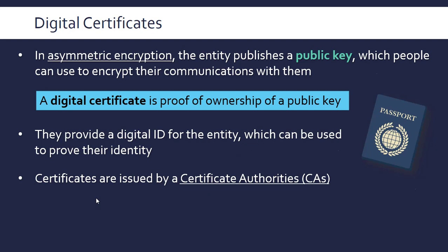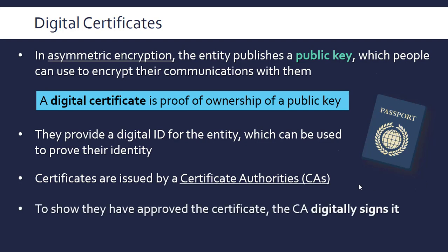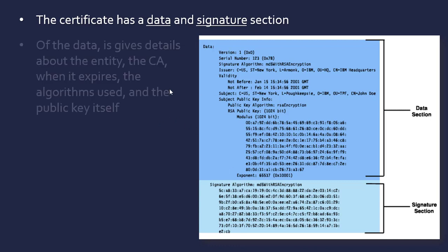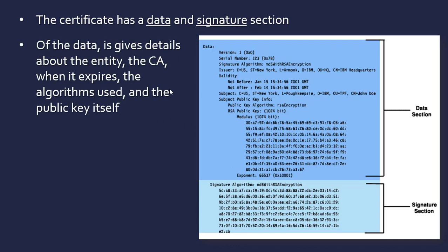There is an element of trust here — this is true for passports as well. When you go to another country, they look at the passport issued by a government and trust that government to have given the passport to the correct person. To show that an authority has approved the certificate, the authority will sign it digitally. The certificate will have two sections: a data section with details about the entity, the authority, expiry date, algorithm used, and the public key itself; and a signature section containing the authority's unique digital signature.